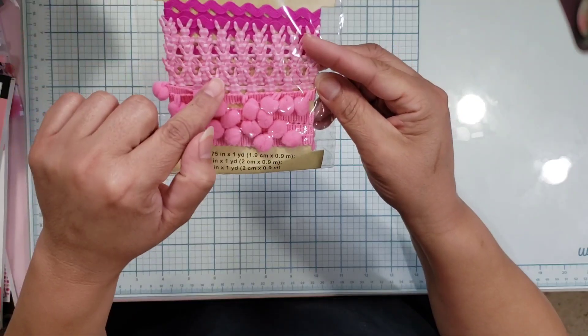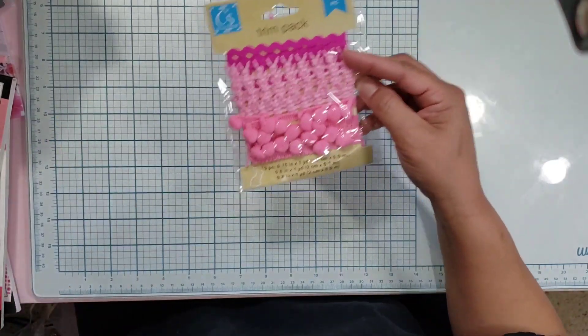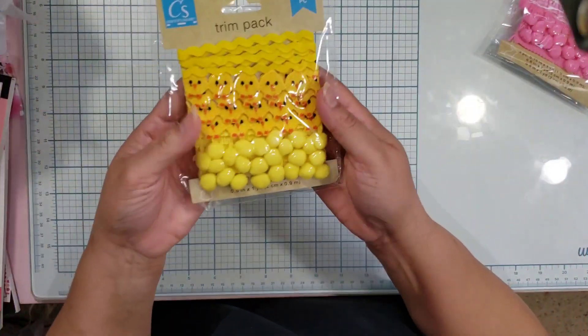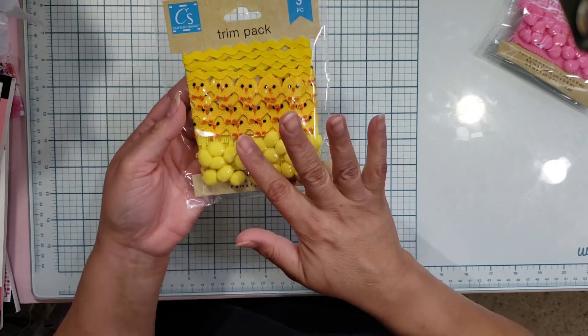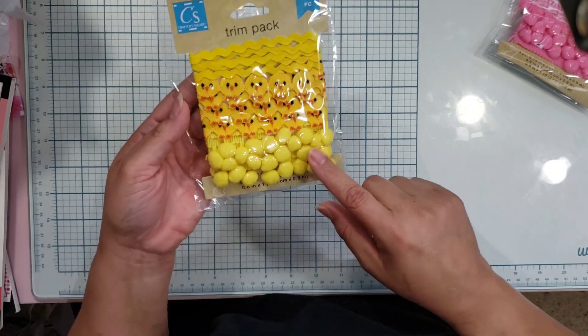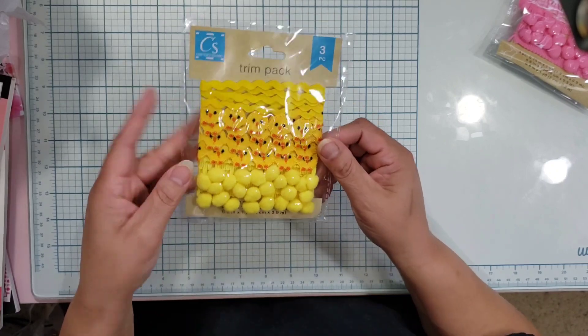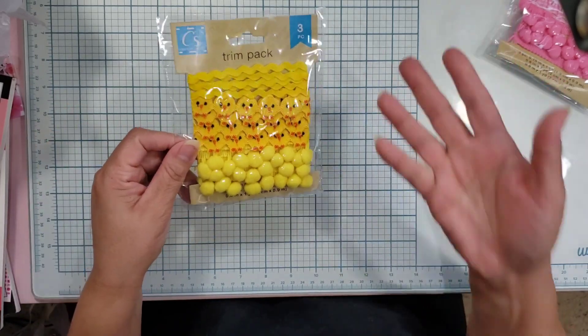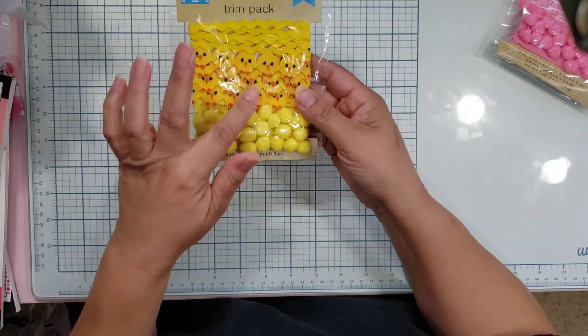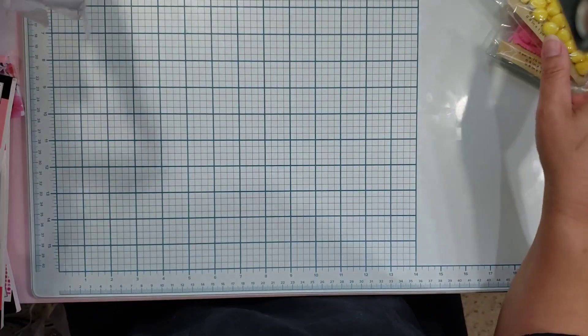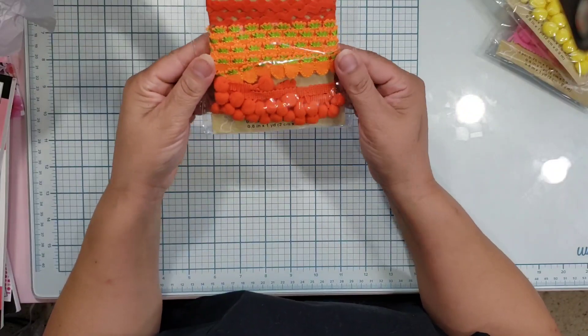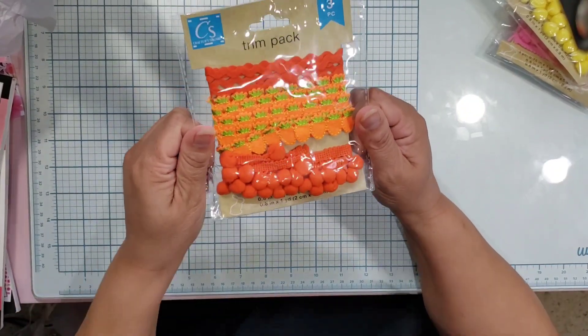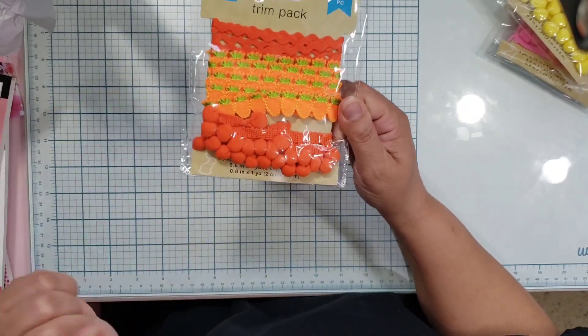They also have one in chicks. I've never seen these. I don't remember them from years past. The last one is the carrot one, which is so cute. Again, it has the pom-poms, a little felt carrot, and the rick rack.